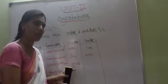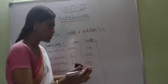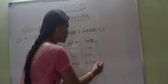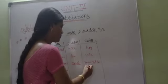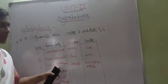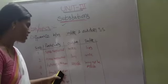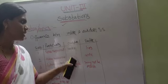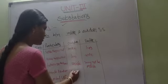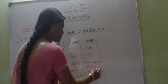For indoor substation, future extension may not be possible since the equipment is also enclosed. It is possible only to some extent, and the flexibility is limited. Regarding fault location, it is easy to find out the fault in an outdoor substation, but difficult to find out in an indoor substation.